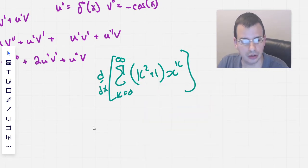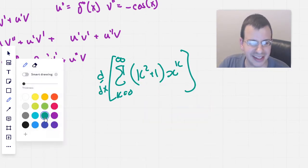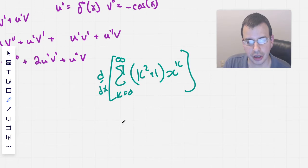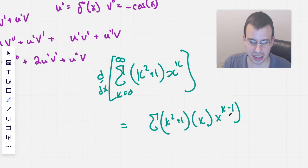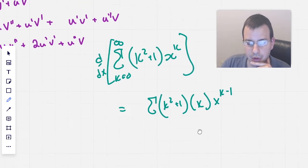The derivative of this is going to be the summation of (k² + 1) times k times x to the k minus 1. So that is just the power rule. We took the k, moved it down, and we had one less k up top.